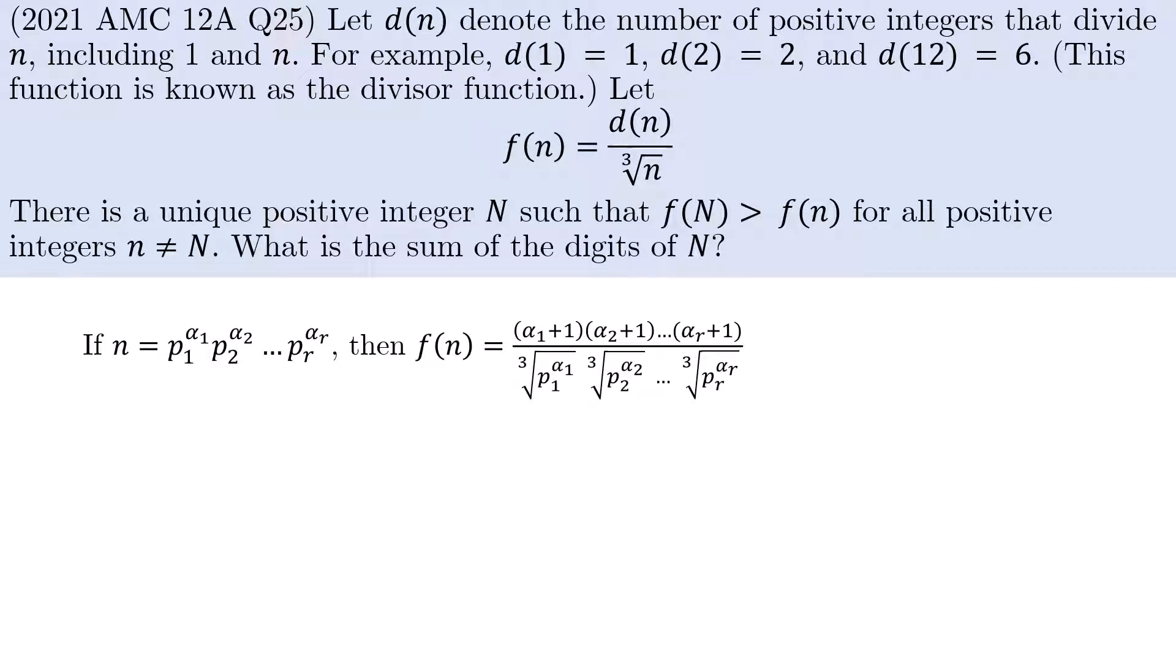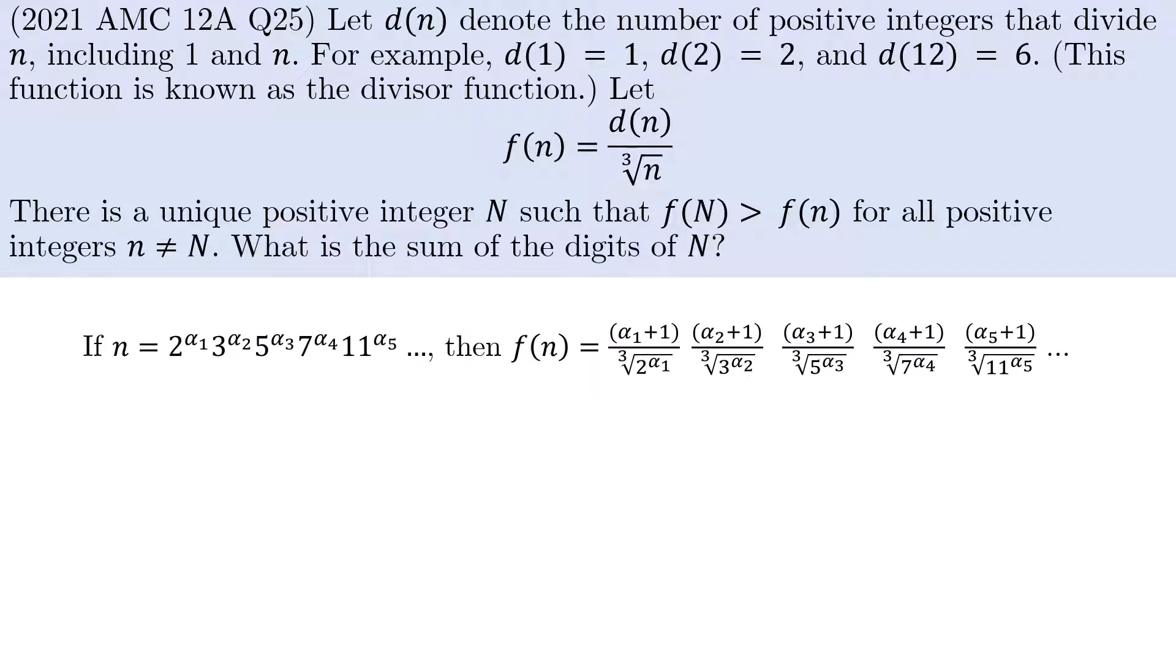And the denominator is simply the cube root of n. But this does not seem very useful because we don't even know which primes are prime factors of n. So let's adjust things slightly. How about we write n in this form instead,